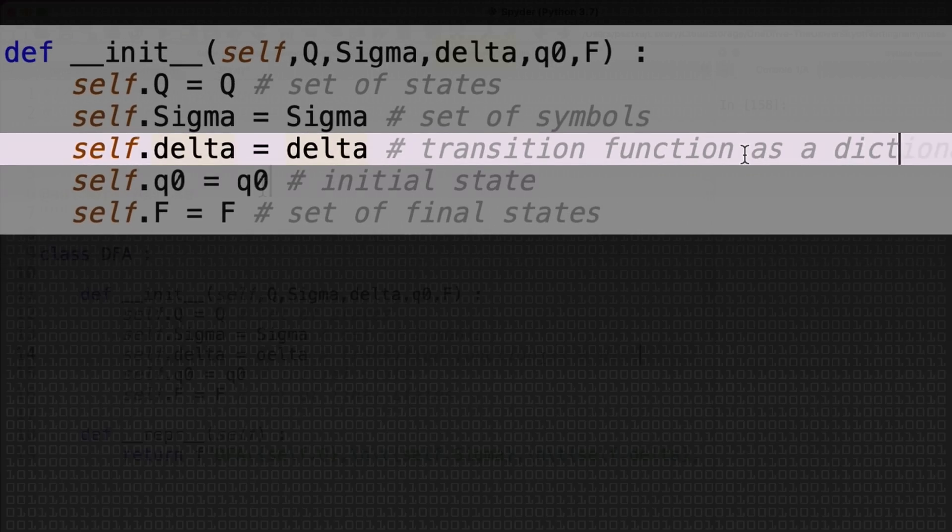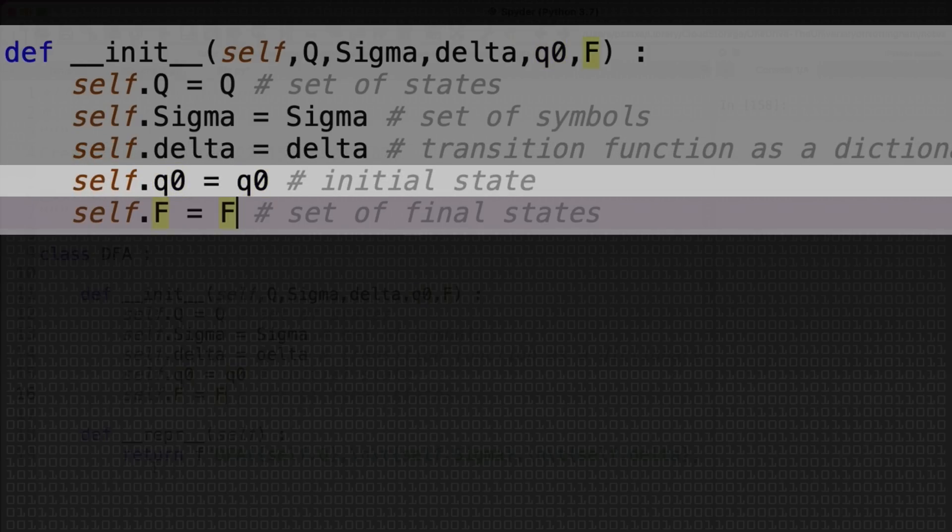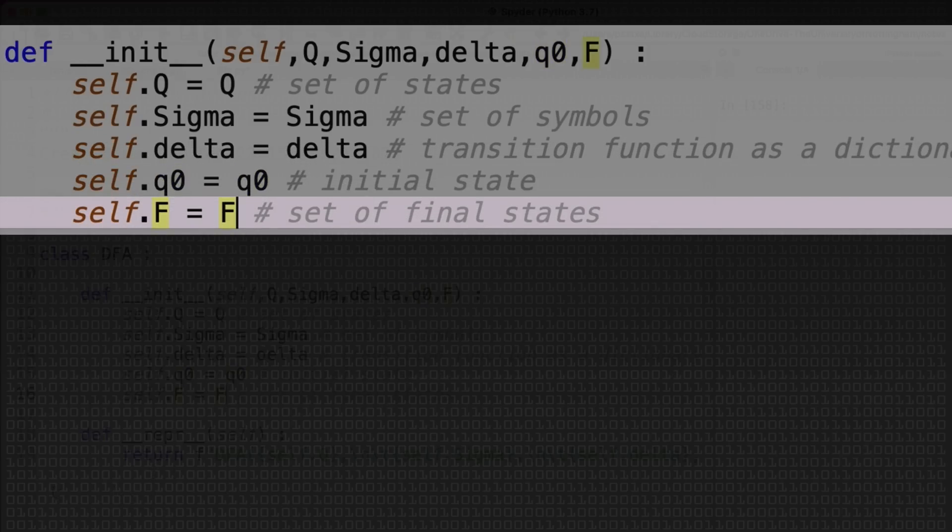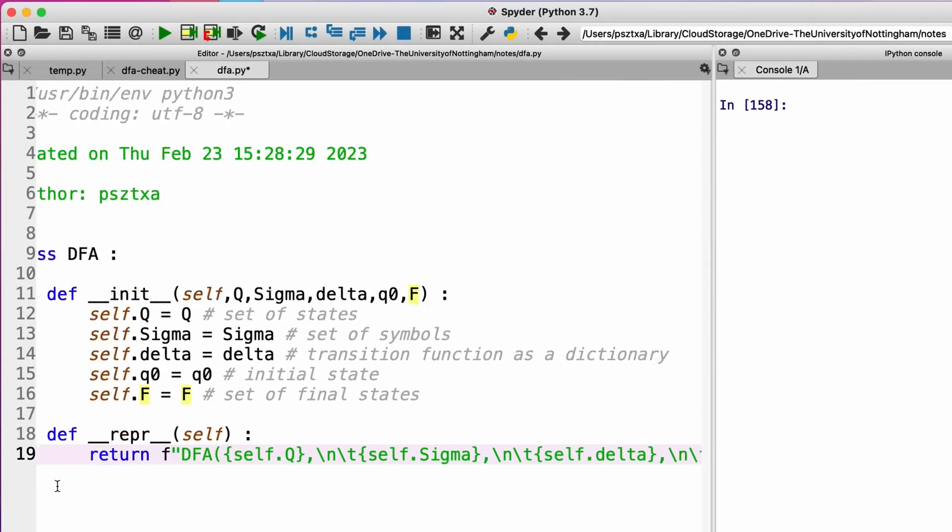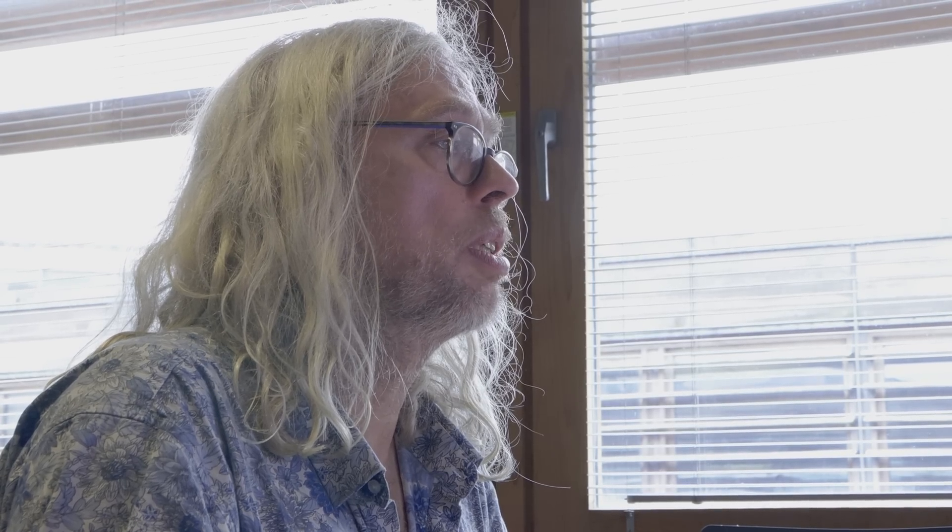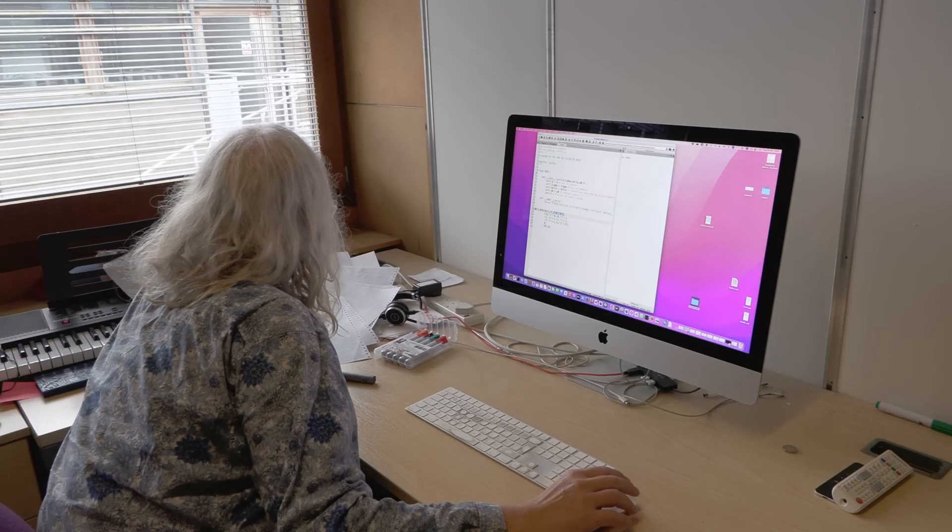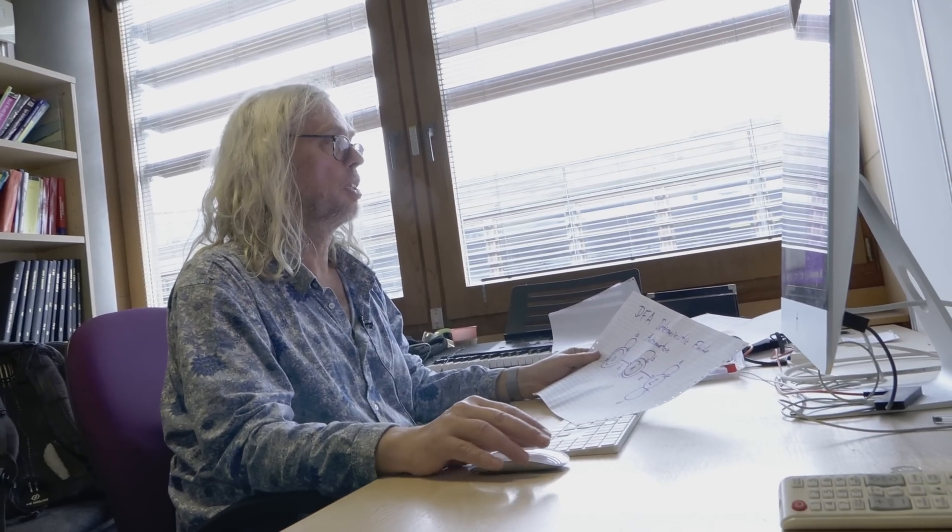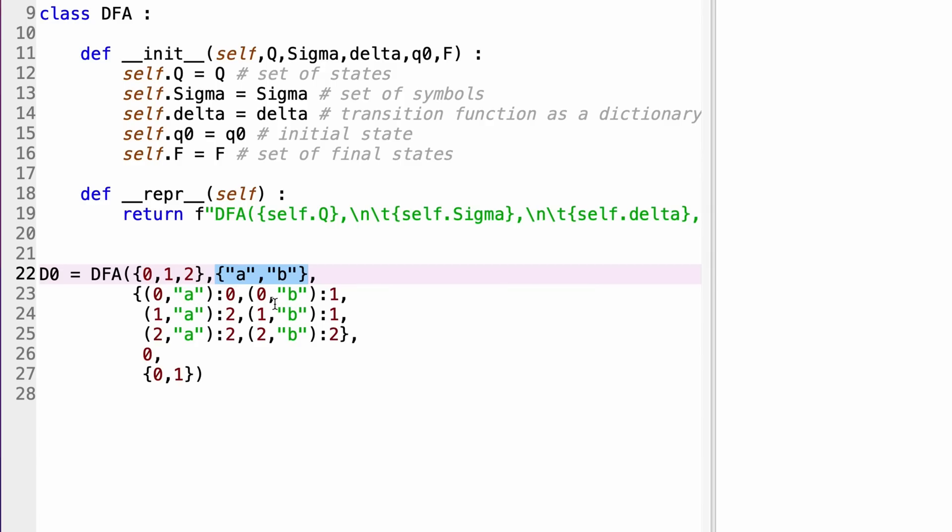There's another Greek letter, the delta, which I also spell out. It's the transition function, which tells us if you're in a state and you have a symbol, what is the next state. And I'm going to use a dictionary for this transition function. We have an initial state, which is the one where the arrow goes in, and we have a set of final states. And I also have a simple print function. So let me define our first automaton. This is the one where all the a's are before the b's. The set of states is 0, 1, 2. The set of symbols is just a, b.